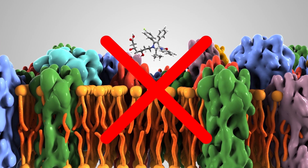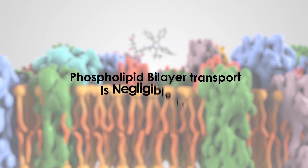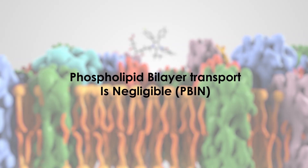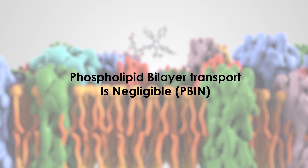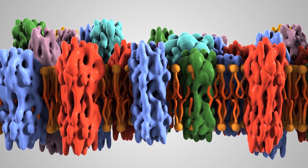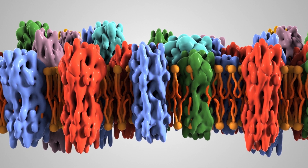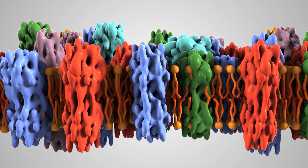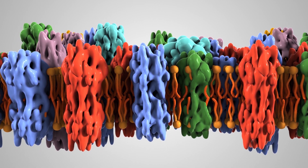However, according to Professor Kell and his colleagues, phospholipid bilayer transport in real cells is negligible — not even water molecules pass in this way. There are few bare bilayers. Instead, to pass through membranes, drugs hitchhike on proteins called solute carriers.